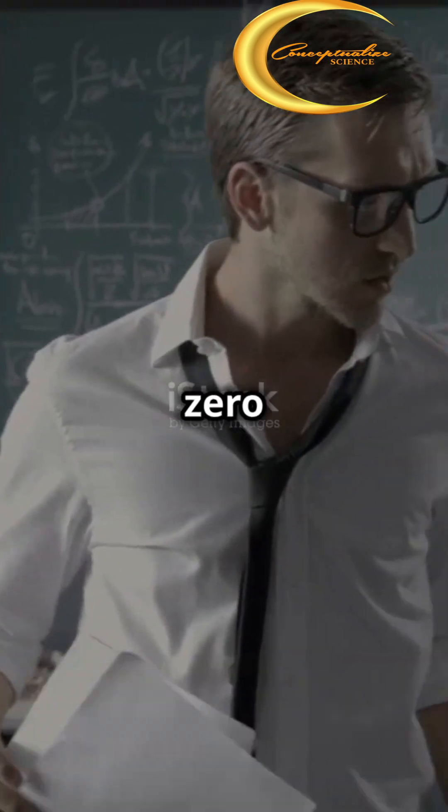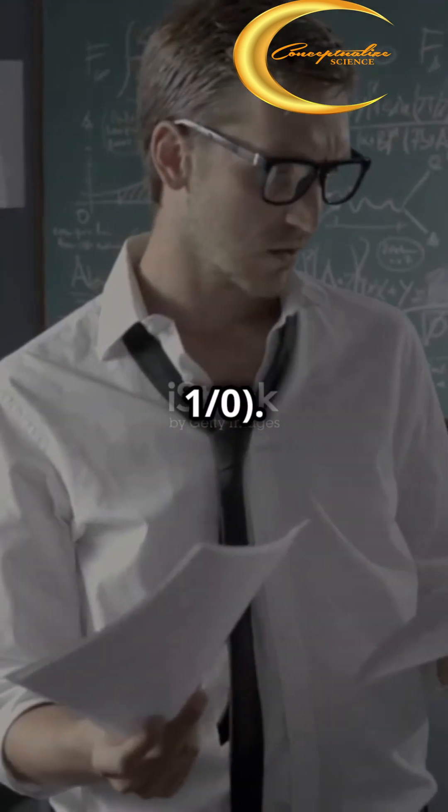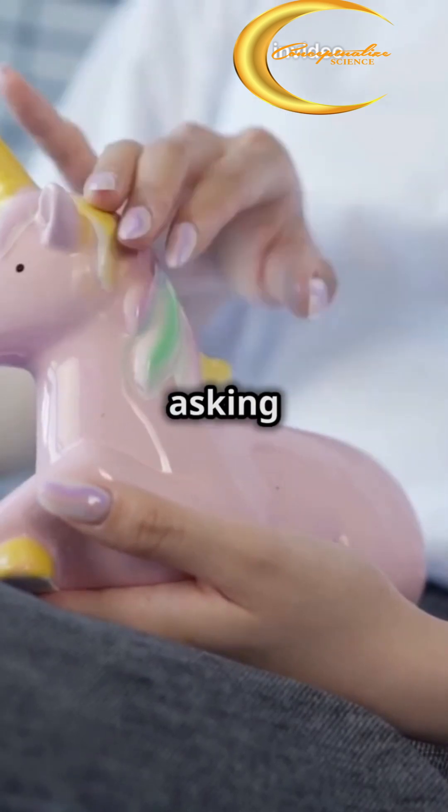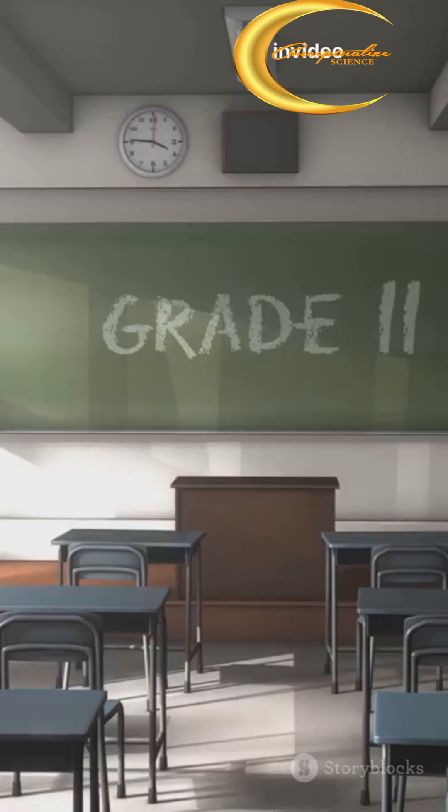Mathematically, 0 divided by 0 is 0 times 1/0. But wait, 1/0 is undefined. It's like asking for a unicorn in math class. Not happening.